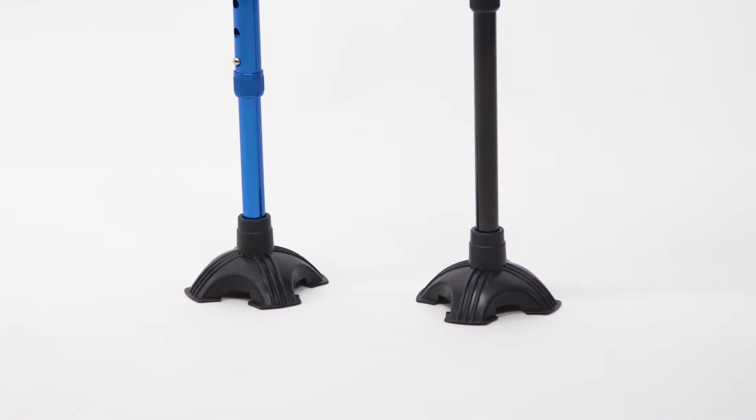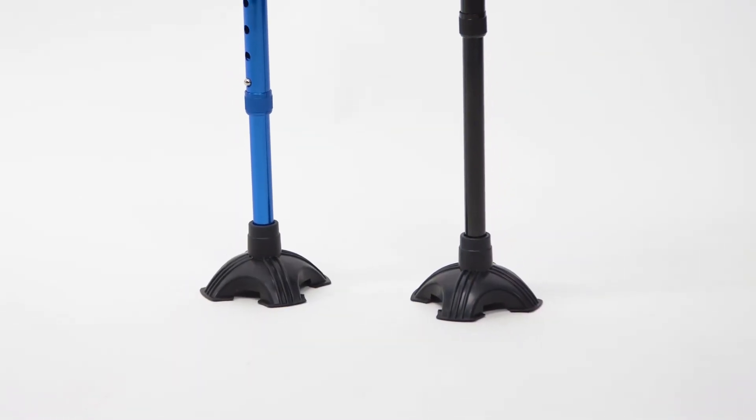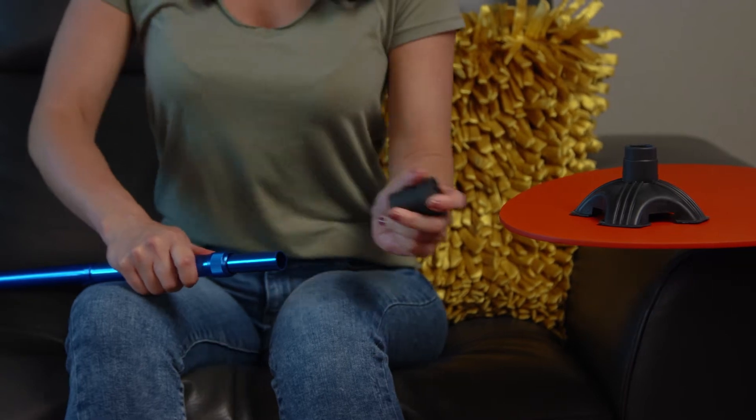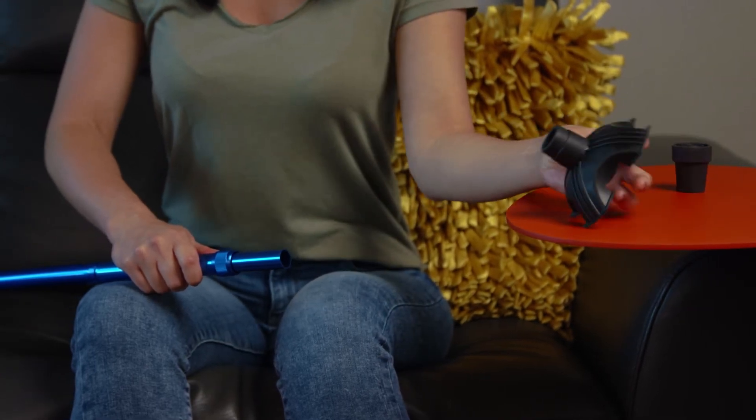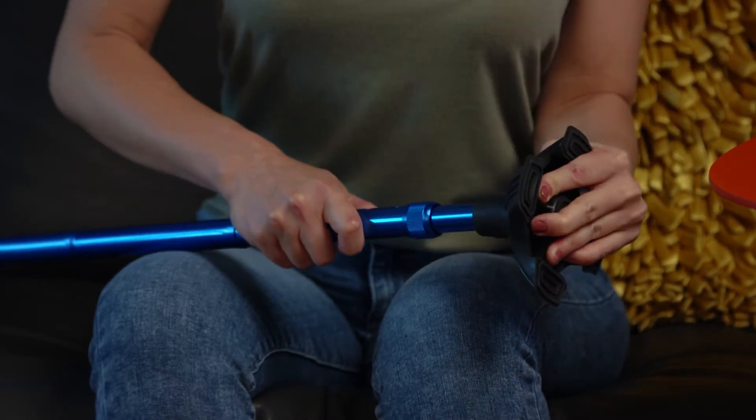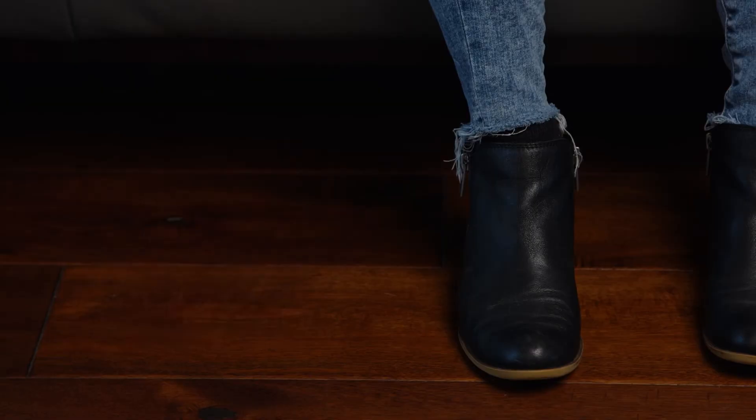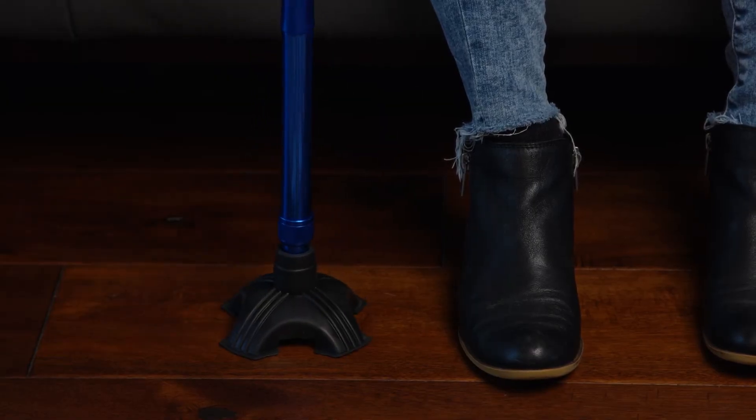The RMS Quad Base Cane Tip installs easily. Start by removing the original standard cane tip, then insert the cane shaft into the RMS Quad Base Cane Tip while pushing down and twisting until fully inserted.